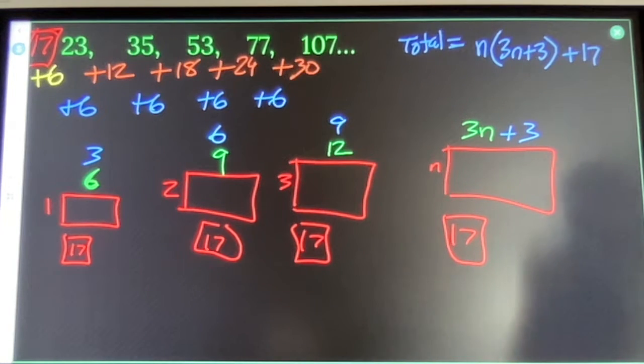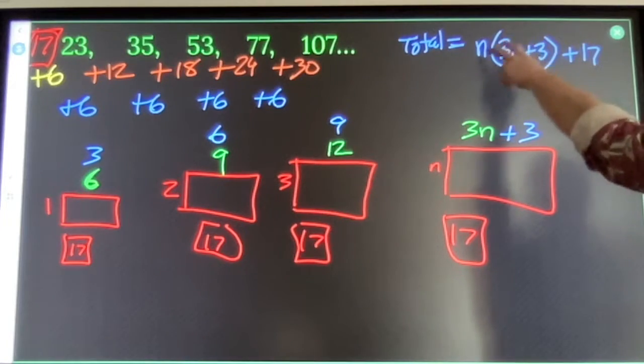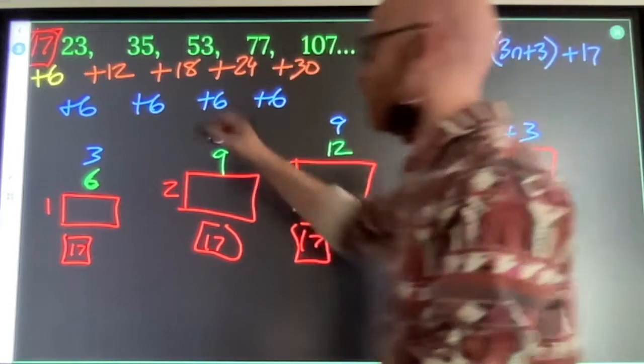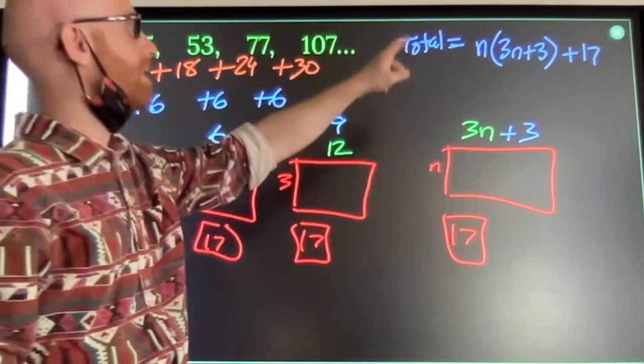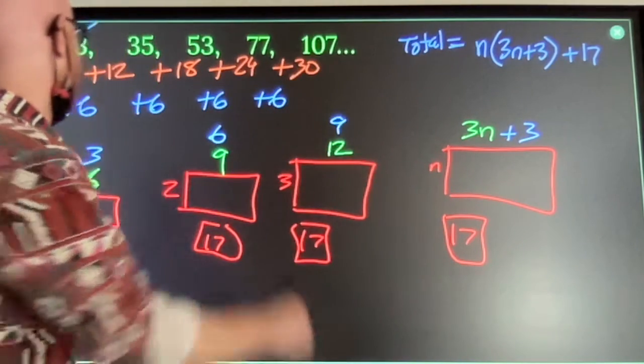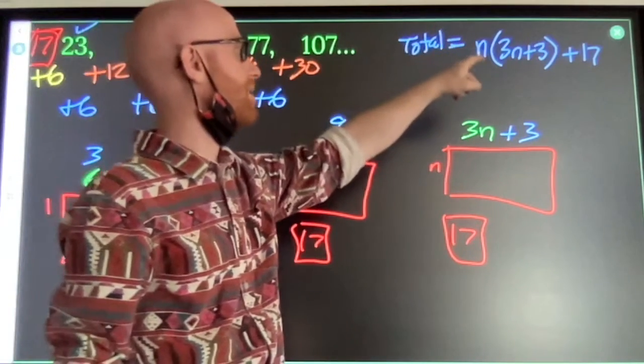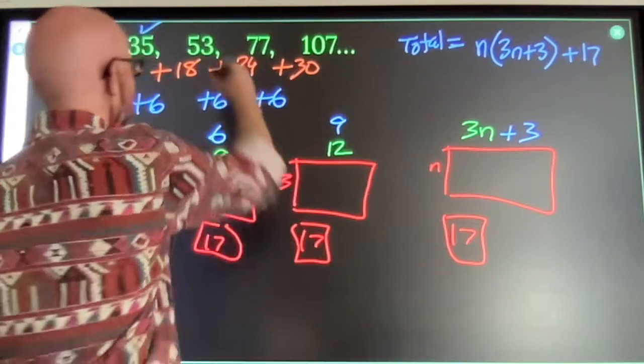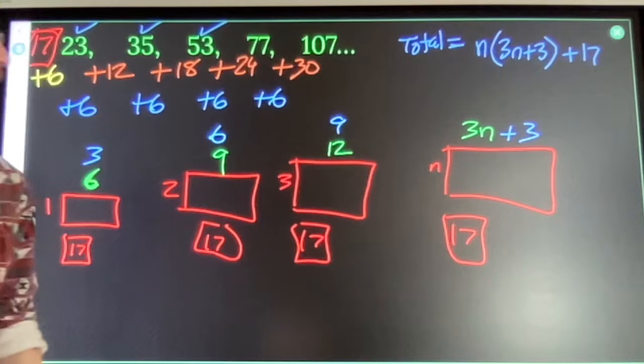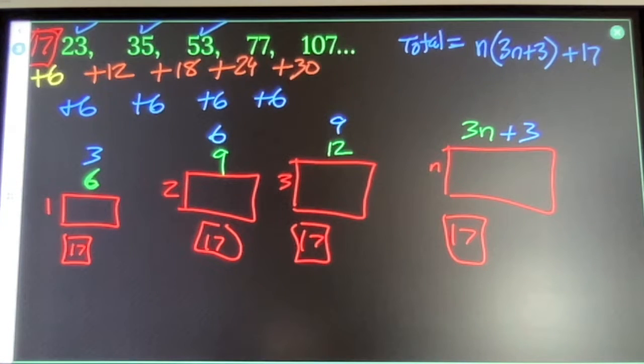Double check that it works. 3 times 1 is 3 plus 3 is 6 times 1 is 6. 6 plus 17 is 23. If I put 2, 9 times 2 is 18 plus 17 is 35. If I put 3, 9, 12, 36, 46, 53. That's my formula and I can use my formula to find whatever it is that I want.